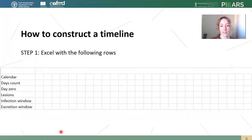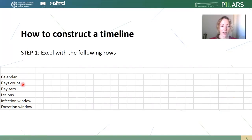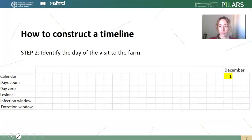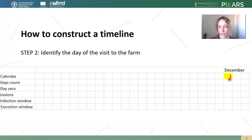So first of all, to build a timeline, we need an Excel sheet that has the following rows: calendar, days count, day zero, lesions, infection window, and excretion window. The first step, now that we have this sheet, is to put the date when we go to the farm to do the outbreak investigation. In the example, it's the first of December.